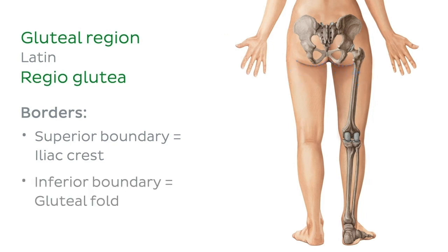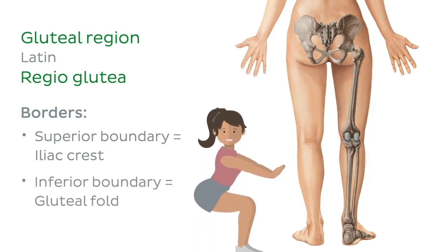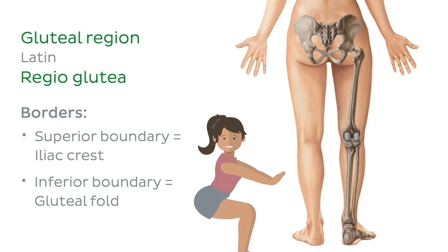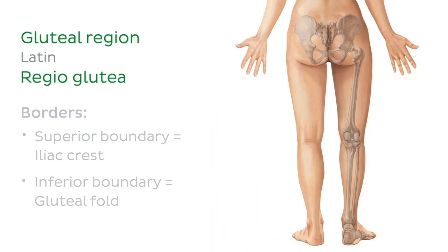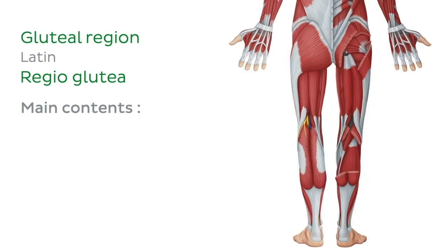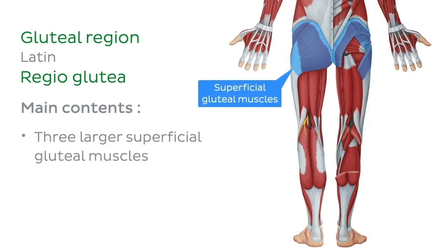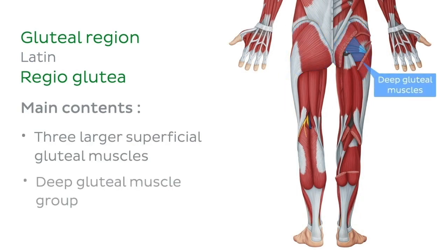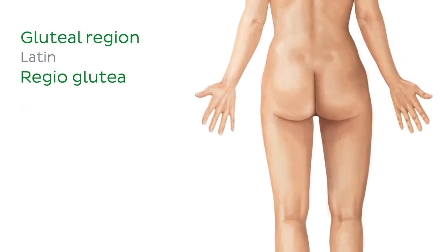If any of you are into doing squats at the gym, I'm sure you'll know that the gluteal region is made up of mostly muscles, some big and some small. The main contents include the three larger superficial gluteal muscles and the deep gluteal muscle group, also sometimes referred to as the inner hip muscles.